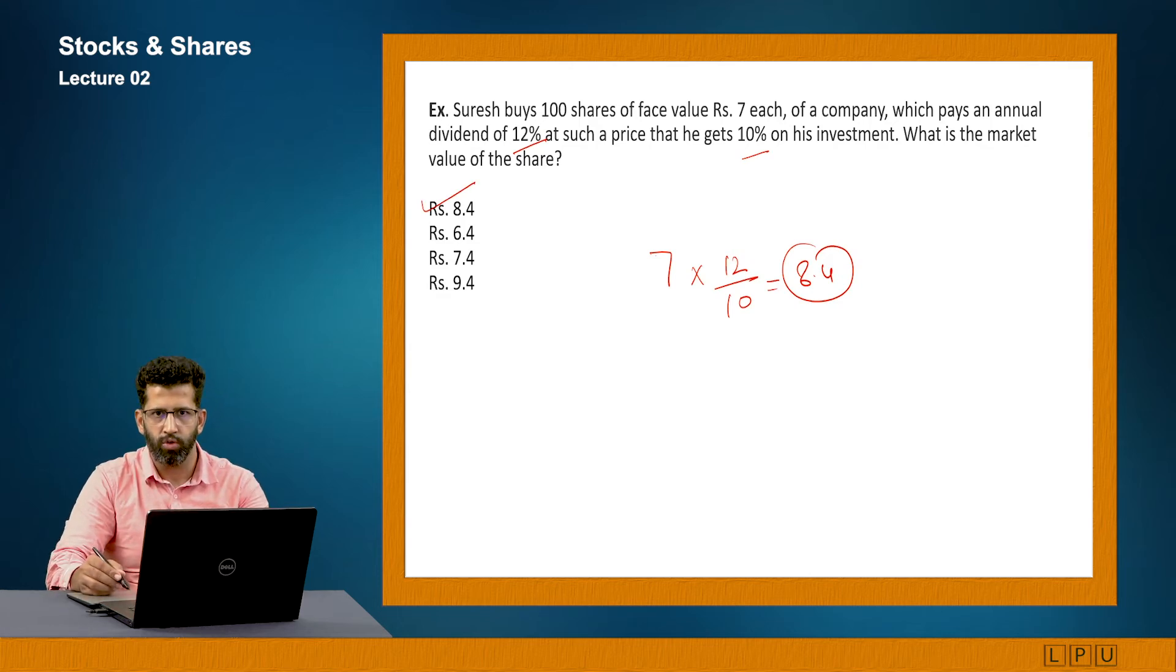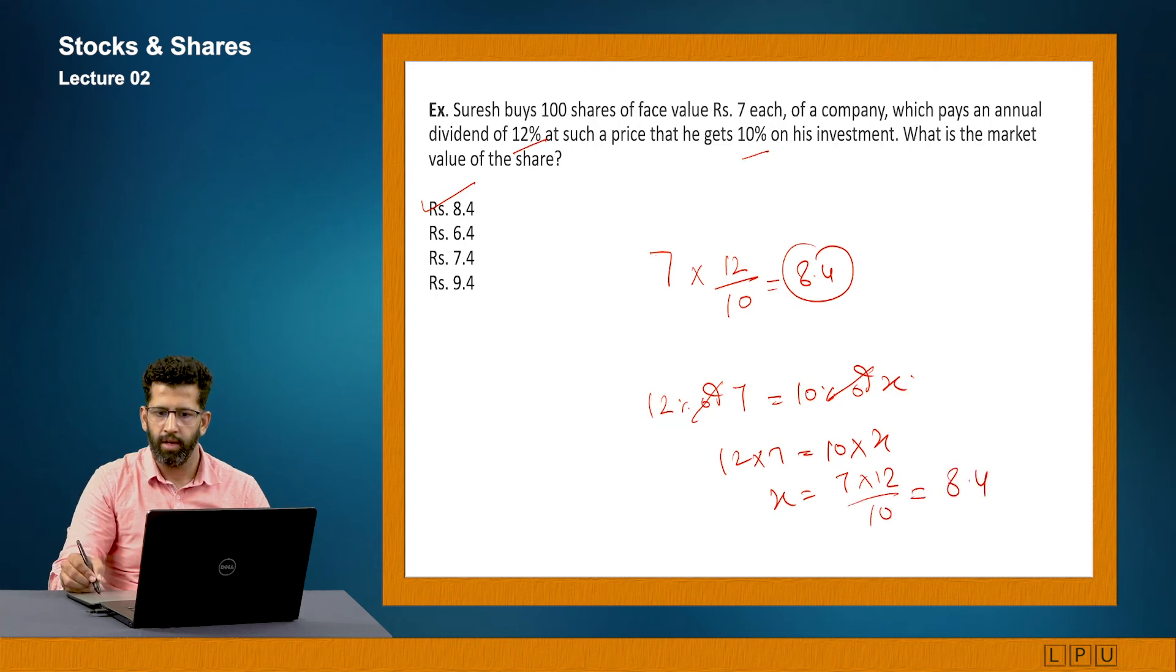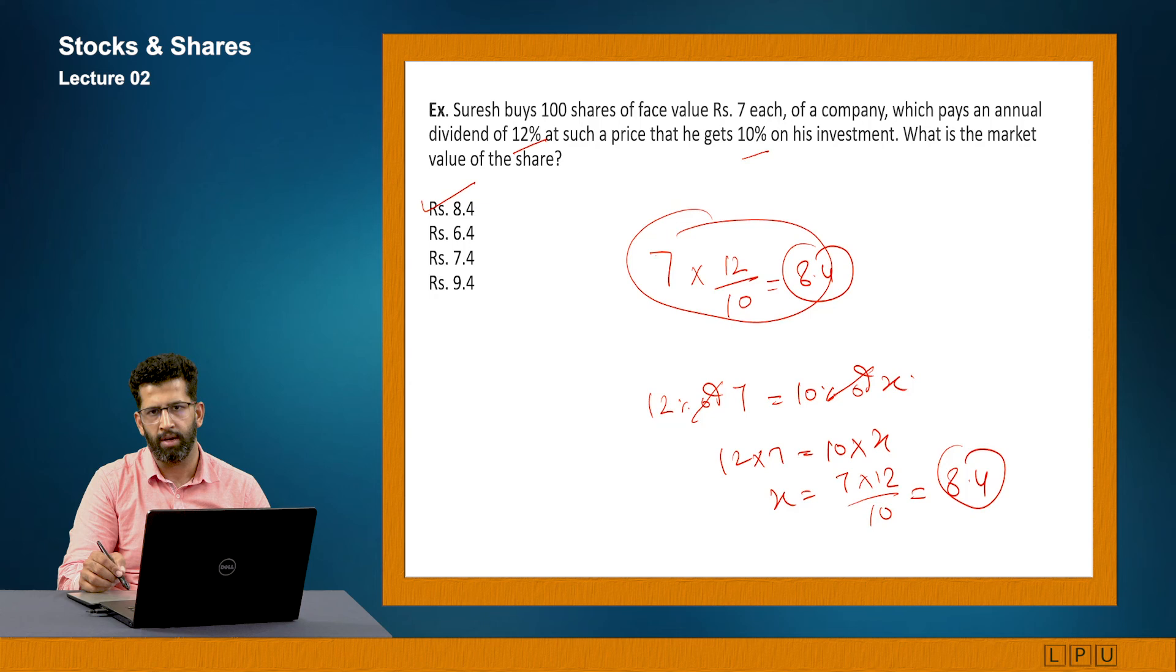I hope you understood the question. The question is simple that as per company, he is getting 12%, but actually he is getting 10%. So I can also say that 12% of 7 is equivalent to 10% of X. X is the price he is actually paying. So I will just solve this. Everything will be cancelled. So this will be equivalent to 12 into 7 is equivalent to 10 into X. Or I can say that X is equivalent to 7 into 12 upon 10. 84 by 10 will give me 8.4. So if you can apply this thing directly, this will save a lot of time. But otherwise, if you want to use the concept only, you can go with the concept as well.